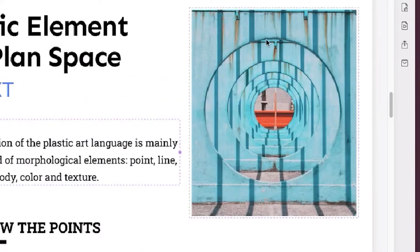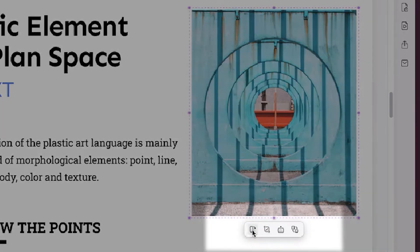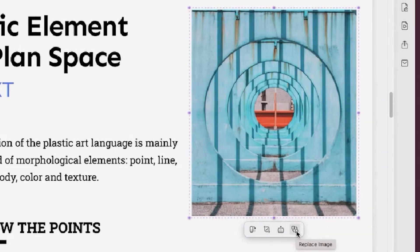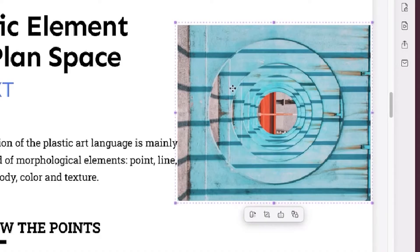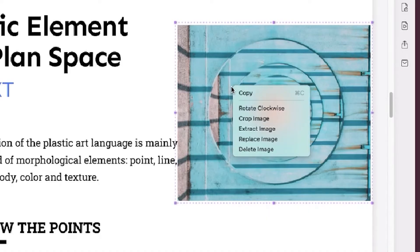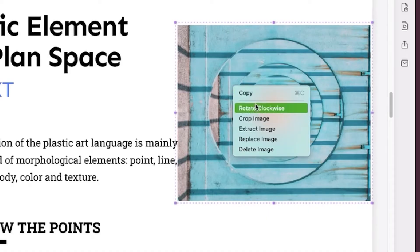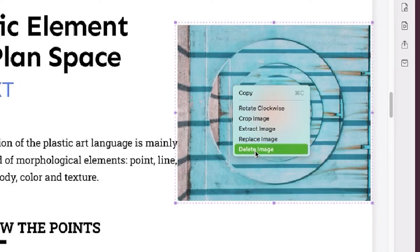For editing an image, click the image you want to change and you can see four options: rotate, crop, extract, and replace. You can select one of them to change the image, or you can right-click the image and select tools to copy, rotate, crop, extract, replace, and delete it quickly.